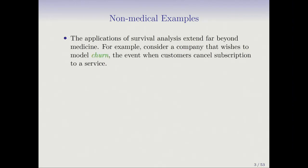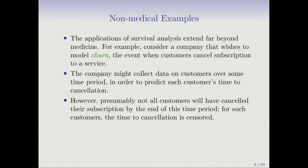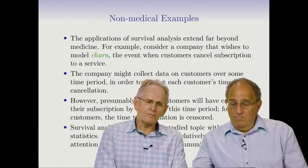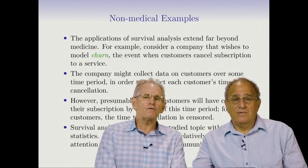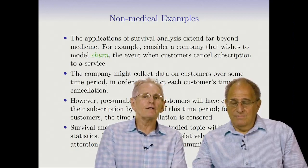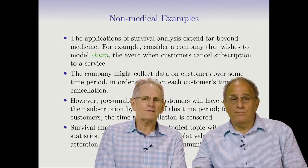Survival analysis originated largely in medicine, but there are applications in other areas wherever there's a censored outcome. For example, suppose a company wants to model churn — the event when customers cancel a subscription. The company might collect data to figure out which customers have the highest chance of canceling. Customers who haven't canceled by the end of the study period are censored. If the company can predict who is likely to churn, they can intervene with special offers to retain them. Survival analysis has been well-studied for 50 or 60 years but is becoming more popular in the machine learning community.